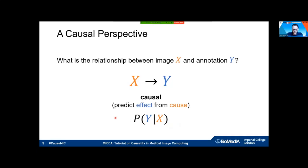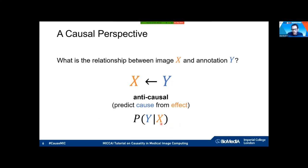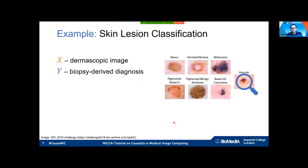Are we looking at an anti-causal setting where the annotation is causing the image — trying to predict the cause from the effect? The conditional distribution is still the same; we're always trying to predict in one direction. We wanted to understand whether causal and anti-causal settings both appear in medical imaging, so we looked at a few examples, starting with skin lesion classification.